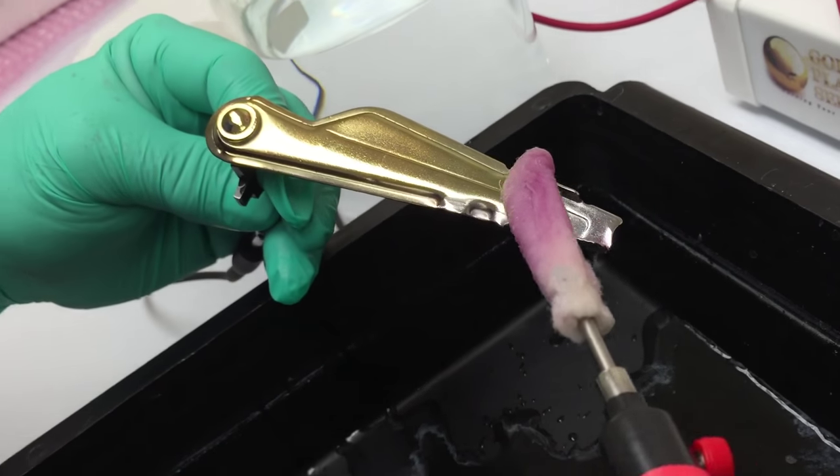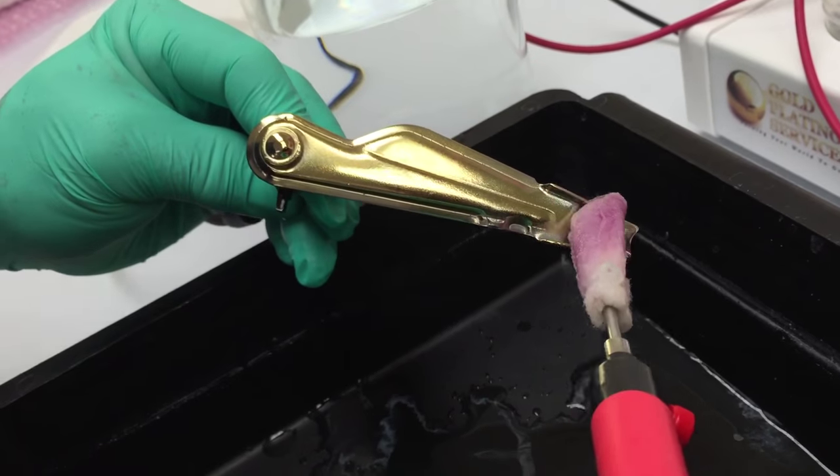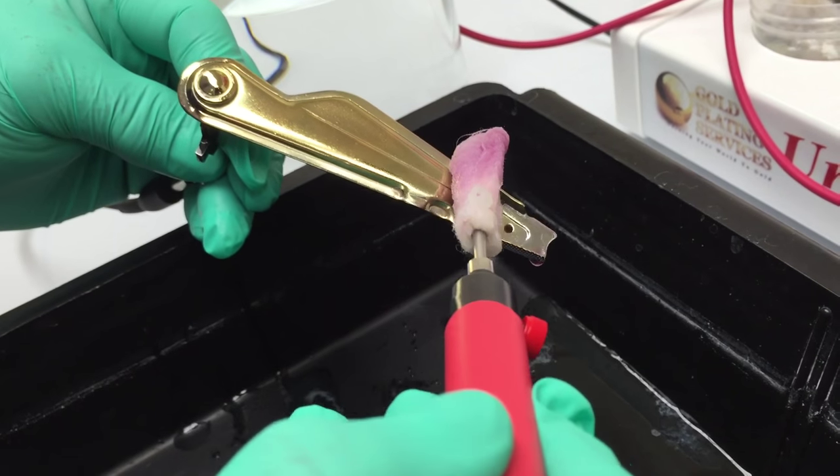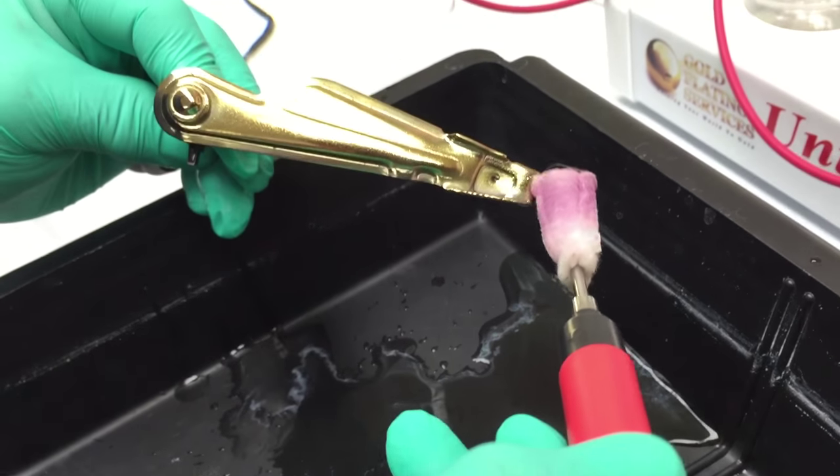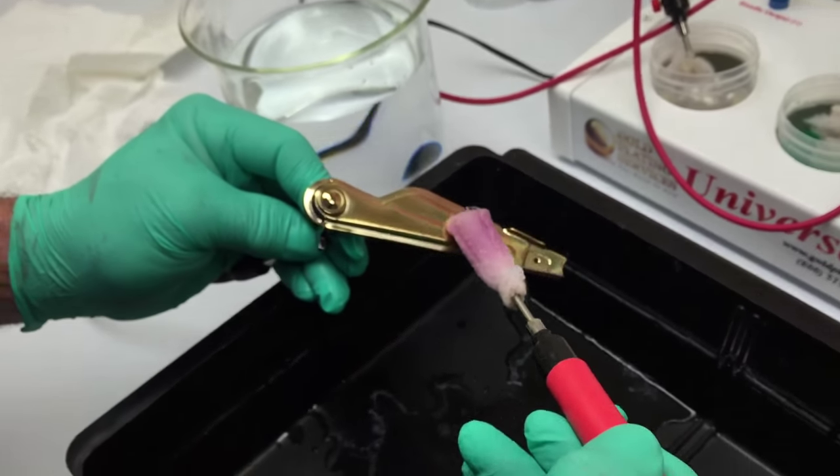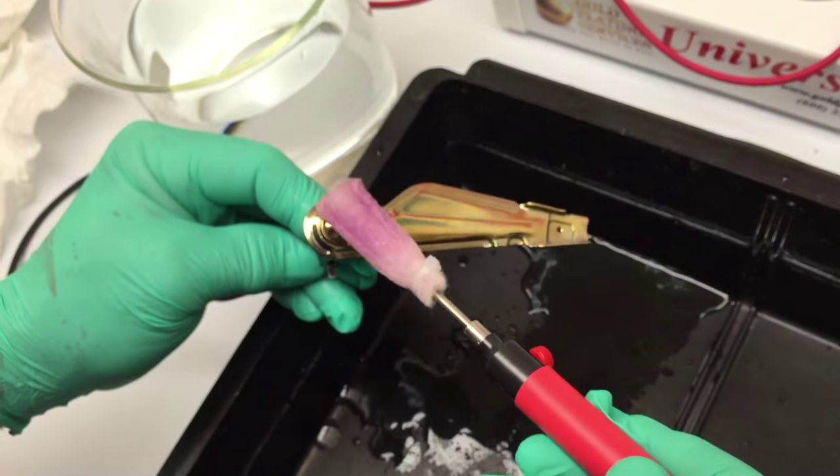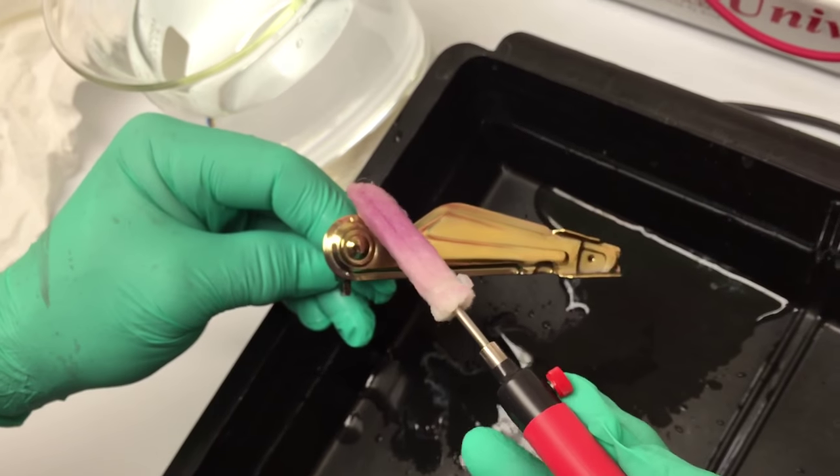What I'm going to do is I'm going to go over the entire piece fairly quickly and get just a kind of a light layer of gold on there to protect the mild steel so that I don't get any oxidation or corrosion.